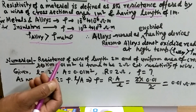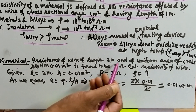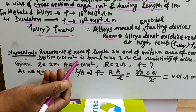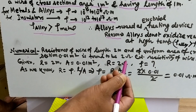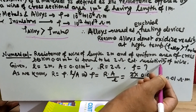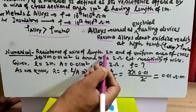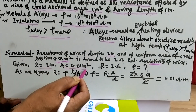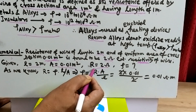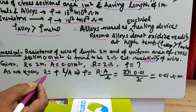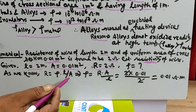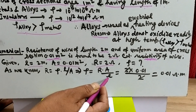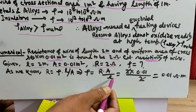Here is a numerical based on resistivity. The resistance of a wire of length 2 meters and uniform area of cross section 0.01 meter square is found to be 2 ohm. We have to calculate resistivity rho. Given: L equals 2 meter, A equals 0.01 meter square, R equals 2 ohm. Using the formula R equals rho multiplied by L divided by A, we get rho equals R multiplied by A divided by L.